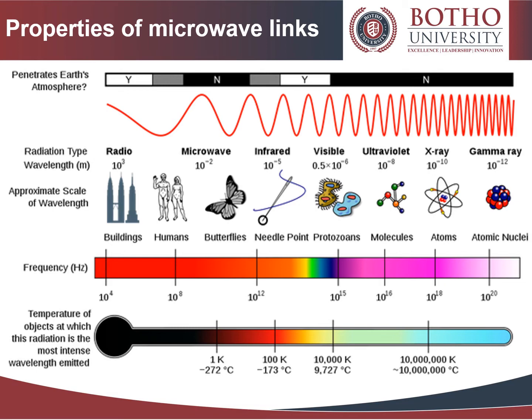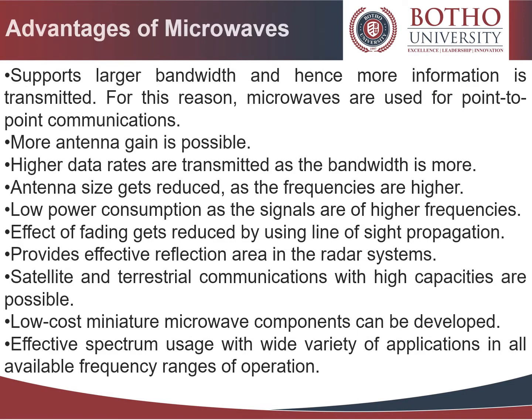Microwave links have developed unique properties. First, it involves line-of-sight communication technology. Energy is greatly affected by environmental constraints including rain fade. It has very limited penetration capabilities through obstacles such as hills, buildings, and trees. It is sensitive to high pollen count, and signals can be degraded during solar proton events. These are the typical properties of microwave links.